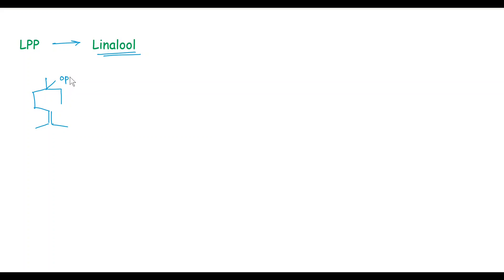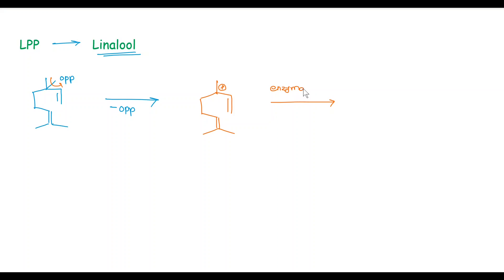Now we will see the synthesis of Linalool from LPP. LPP means Linalyl Pyrophosphate. The structure of LPP is like this. In the first step, loss of OPP takes place and we get an allylic carbocation. In the next step, enzymatic hydrolysis takes place and we get the product. This is called Linalool.